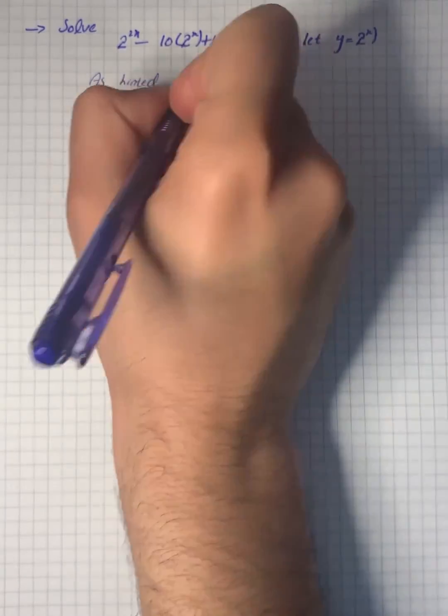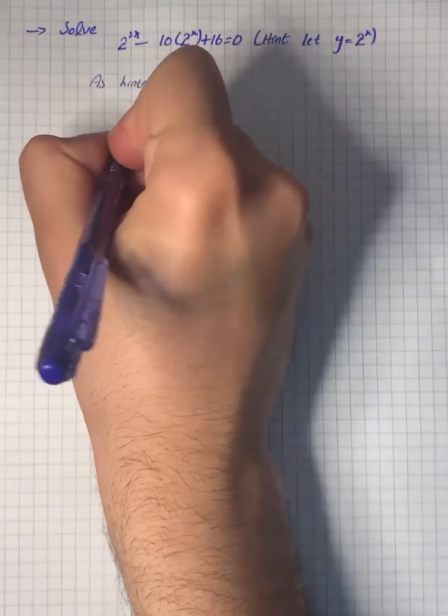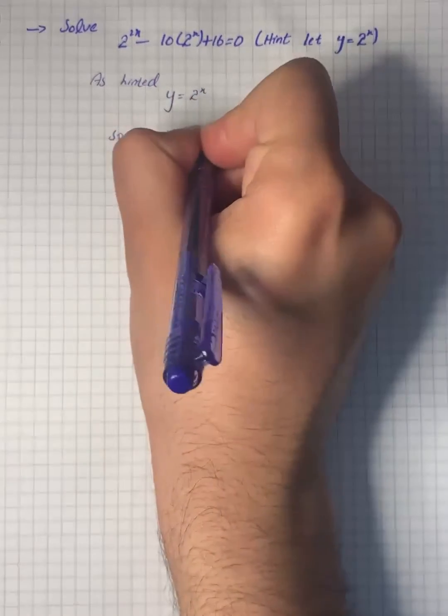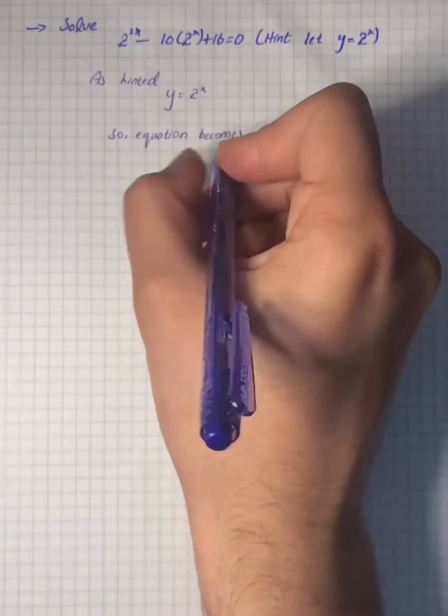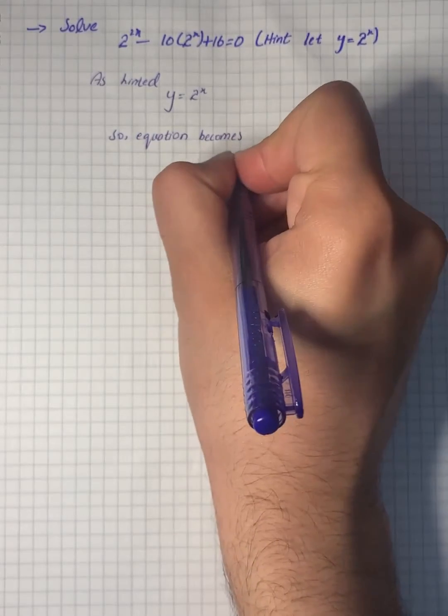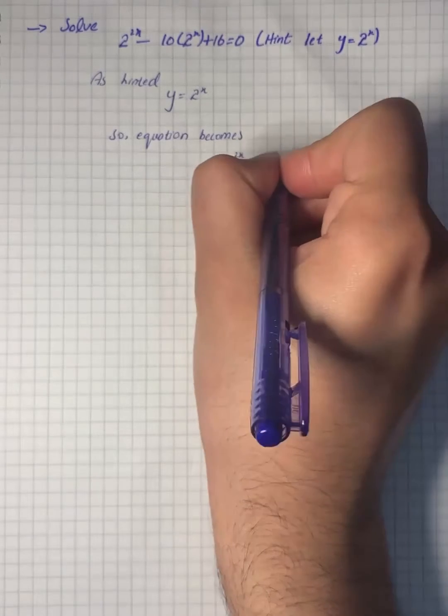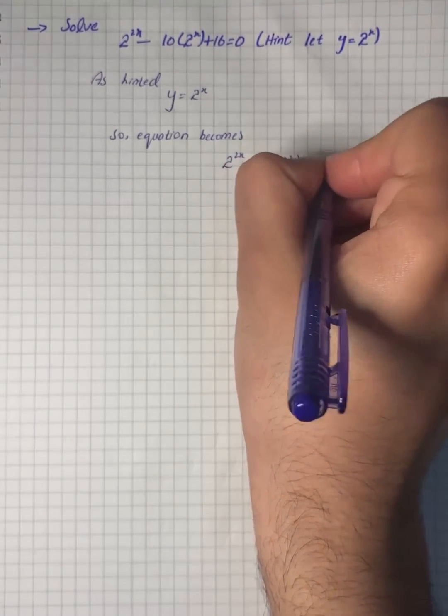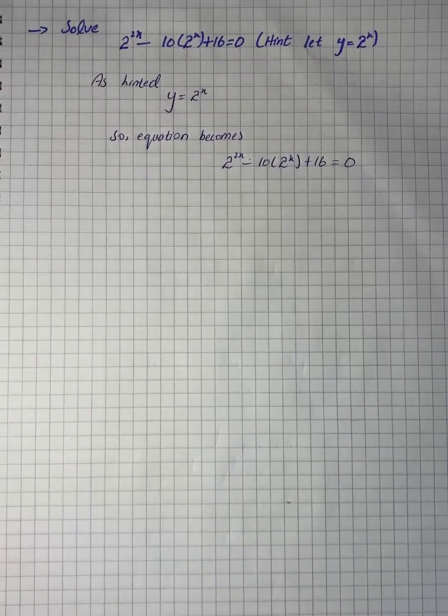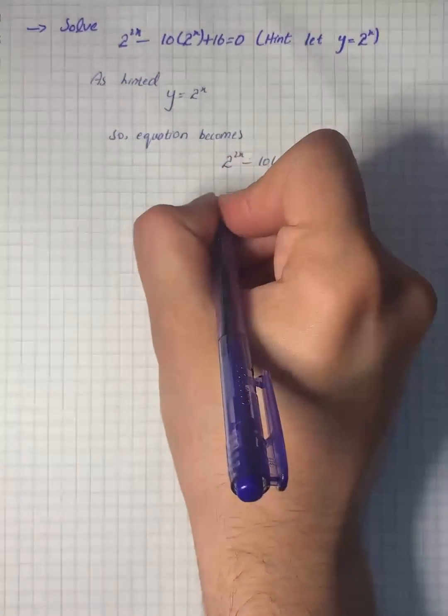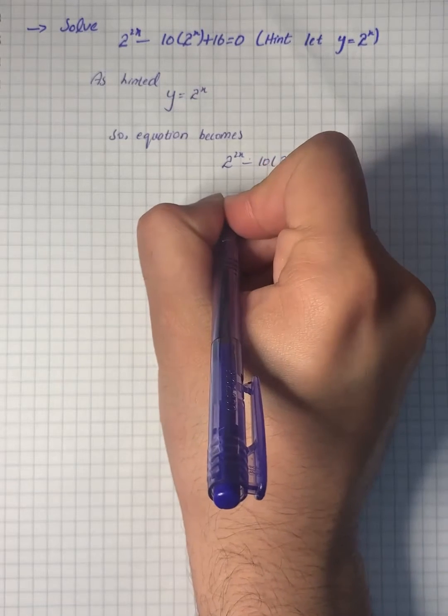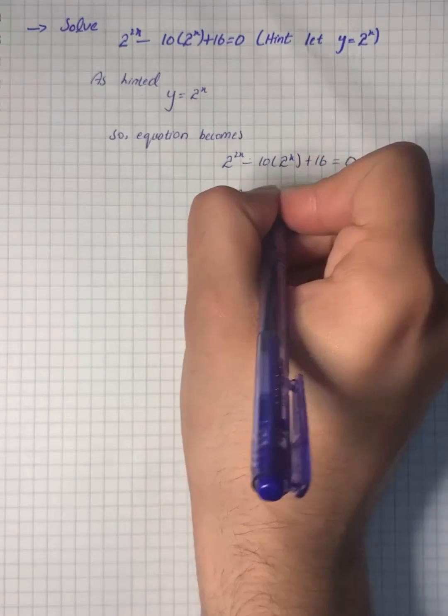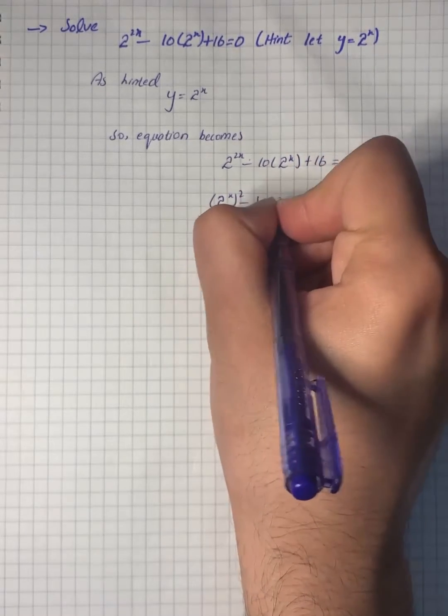So the equation becomes 2^(2x) - 10(2^x) + 16 = 0. Now we will start simplifying by taking 2^x and writing it in terms of y.